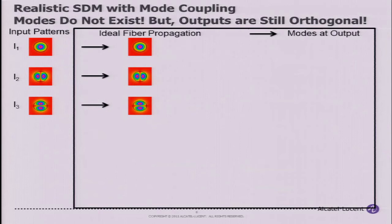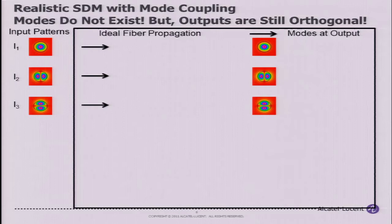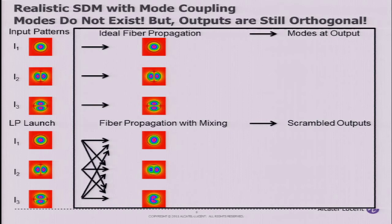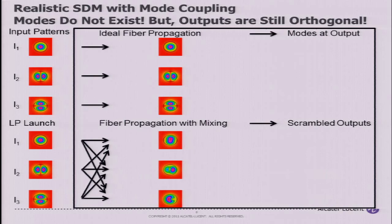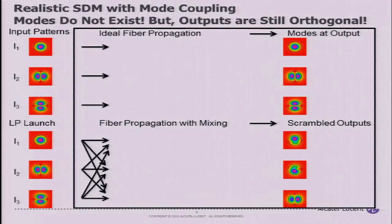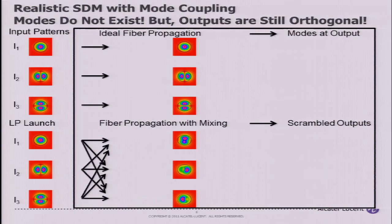Another view of mode mixing: in perfect fiber, if you launch a mode, it maintains its shape through the whole fiber. However, over long distances in these multi-mode fibers, the modes do not really exist because you cannot launch any spatial pattern that will maintain its shape. The MIMO tries to undo these spatial patterns by measuring coherent samples across a beam, and then you can reconstruct your input fields.